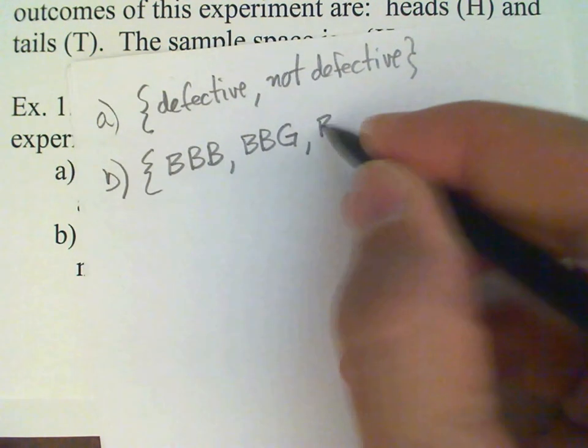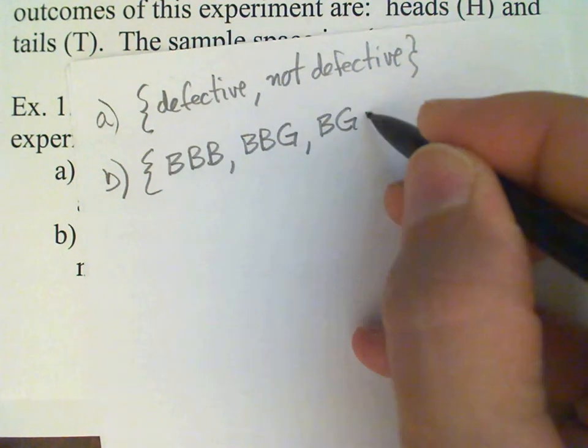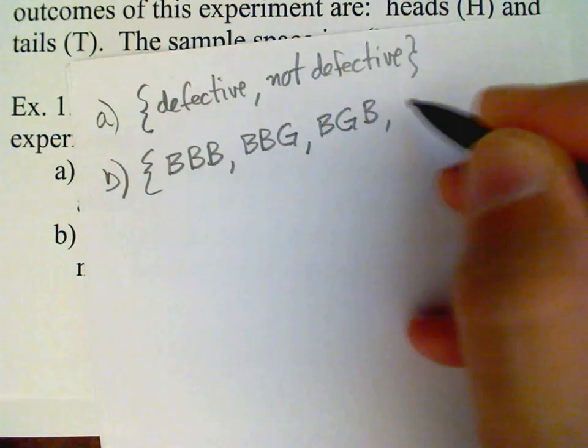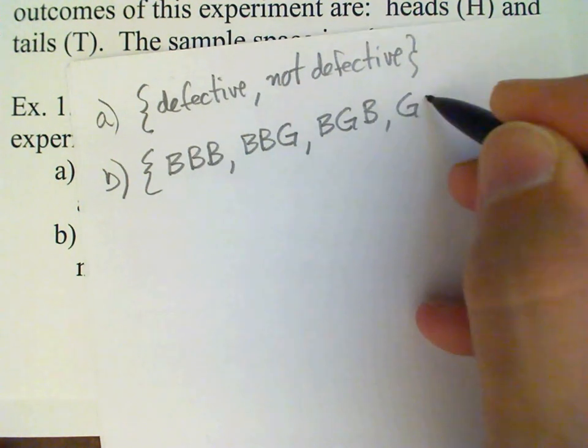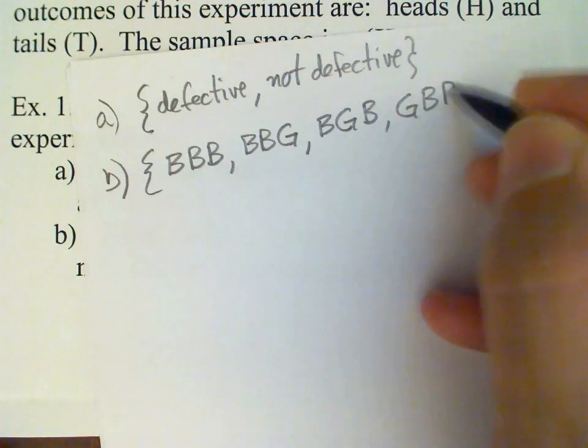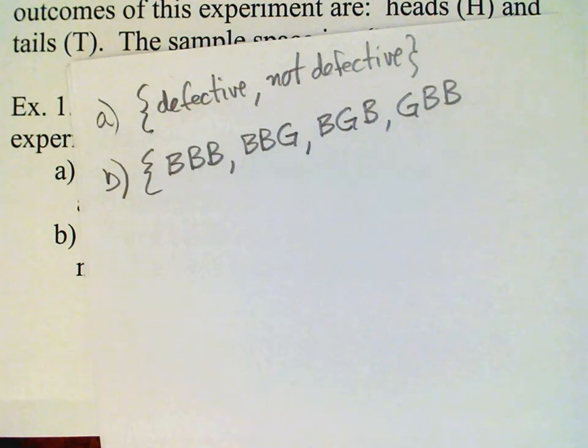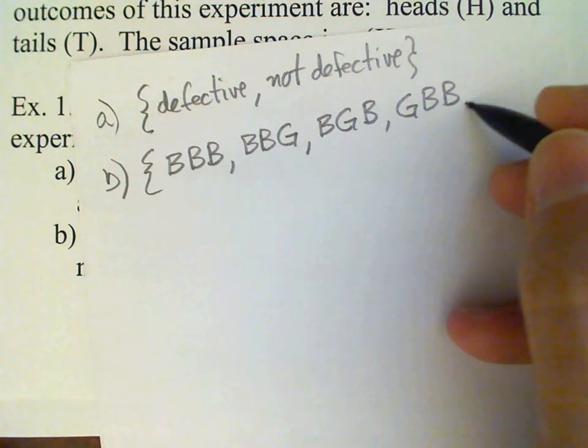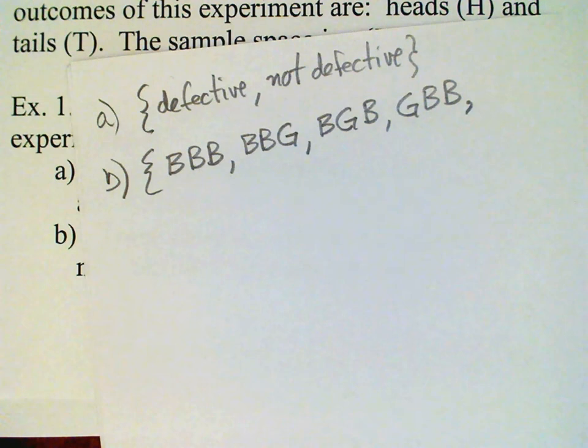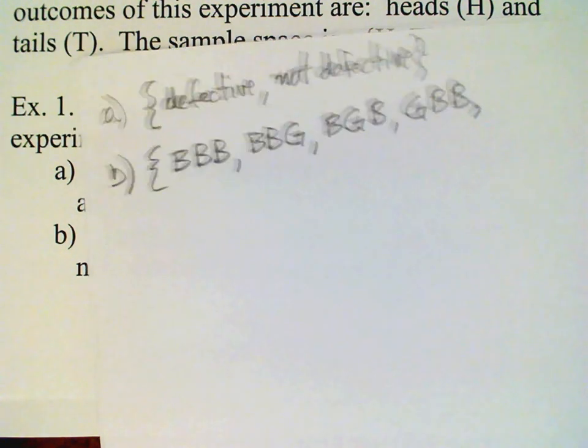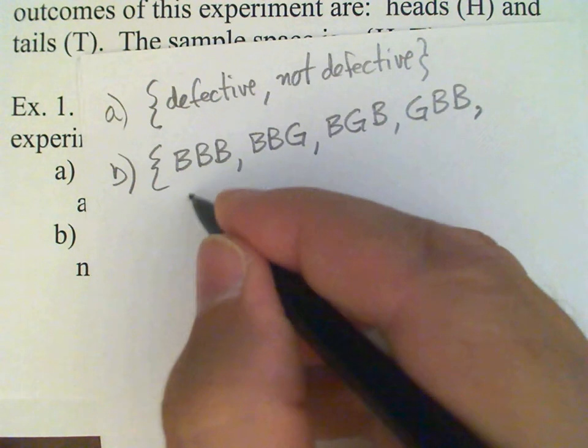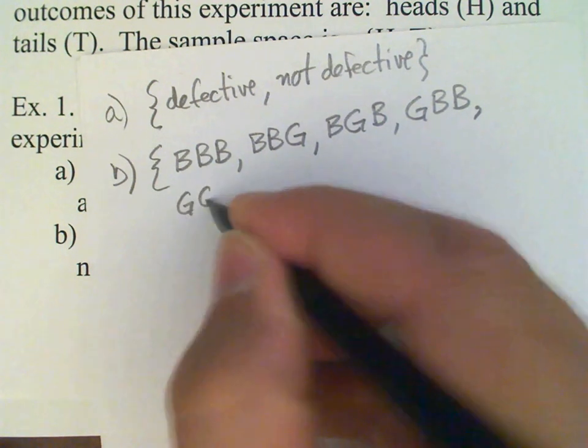And of course, the girl could be the middle child or the girl could be the oldest. Obviously these are different outcomes. As I'm sure you know, it makes a difference whether the girl is the youngest, the middle child, or the oldest. And then we can give the possibilities in case there are two girls: girl, girl, boy.